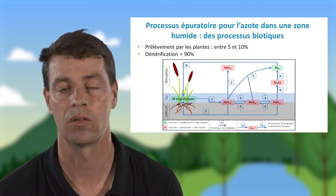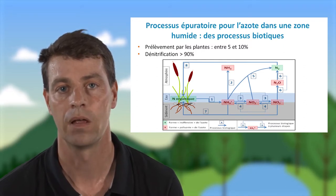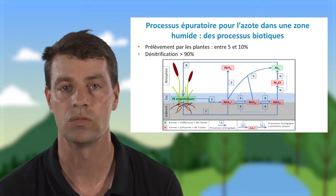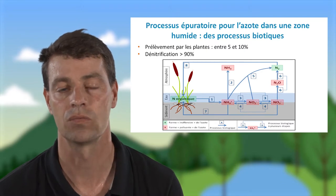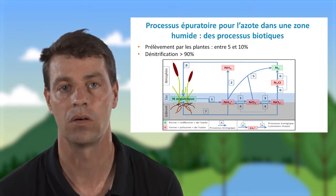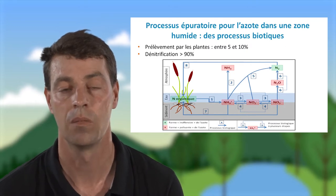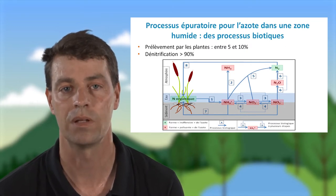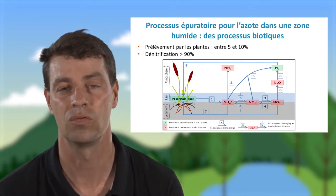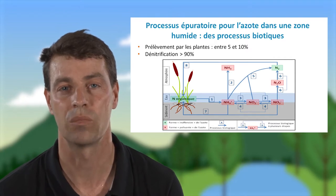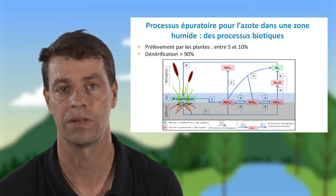Ces processus sont très variables dans le temps et dépendent de nombreux facteurs. Le processus de dénitrification permet de transformer les nitrates en diazote, un gaz inerte de l'atmosphère, mais une étape intermédiaire est aussi la production de protoxyde d'azote, le N2O, qui est un puissant gaz à effet de serre.